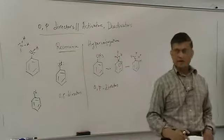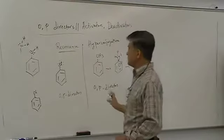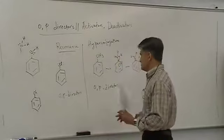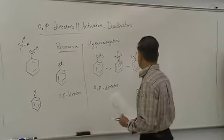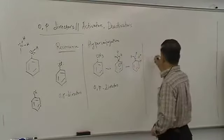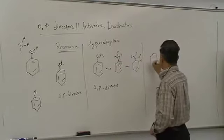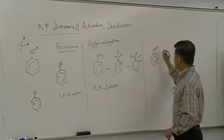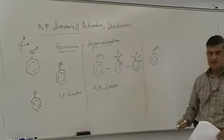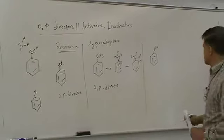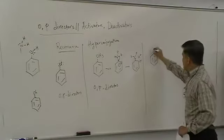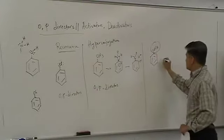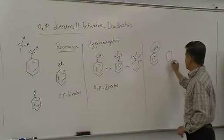Anything other than ortho-para directors would be meta directors, which makes your life easier to understand. Let's draw a few structures to determine whether a group is an ortho-para director or a meta director. Say I have COOH attached to benzene — the common name for this compound is benzoic acid. Make sure you know it. If you write down this part explicitly, it helps you determine the directing effect.